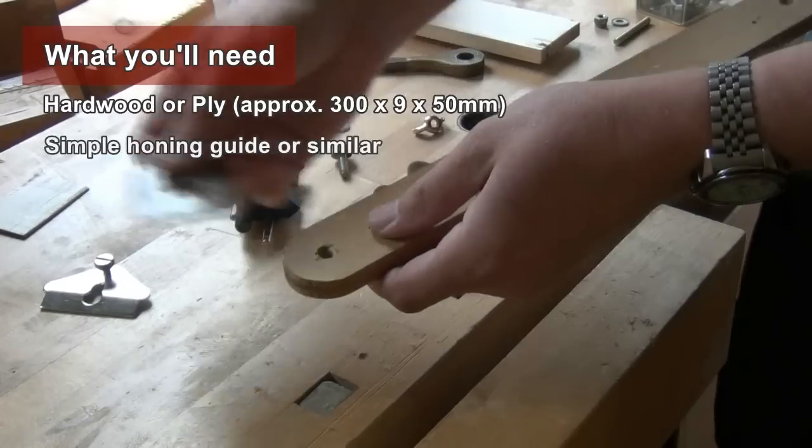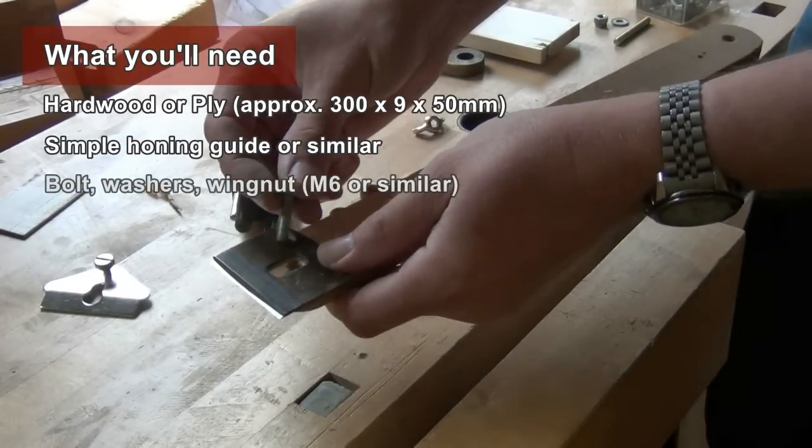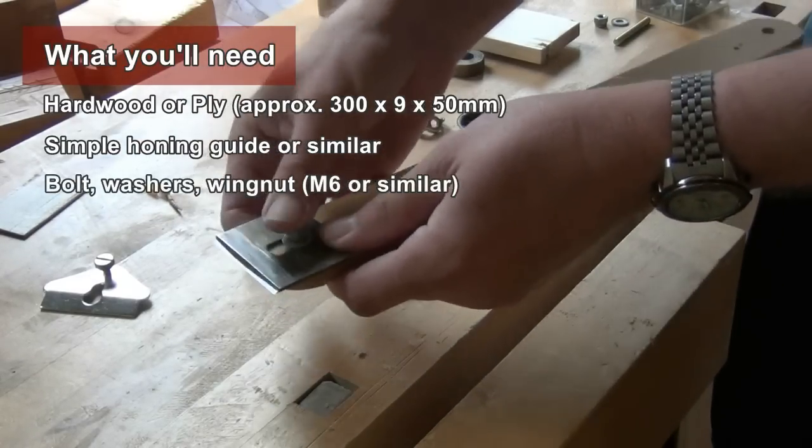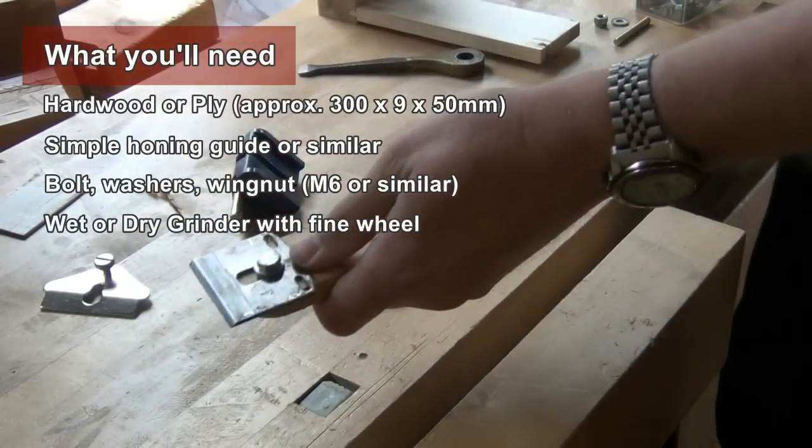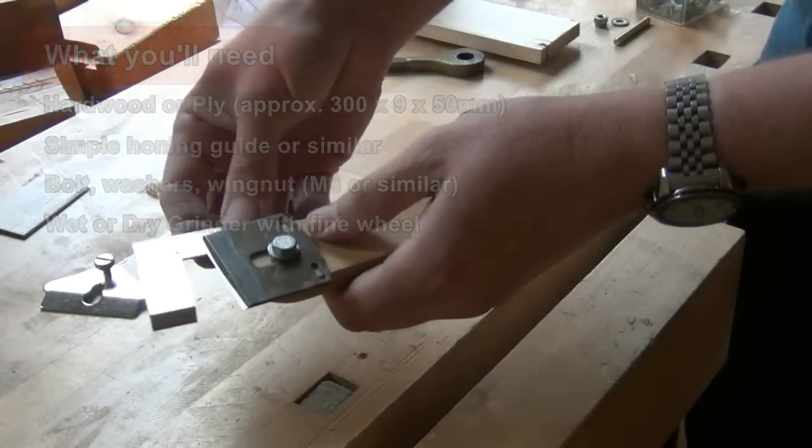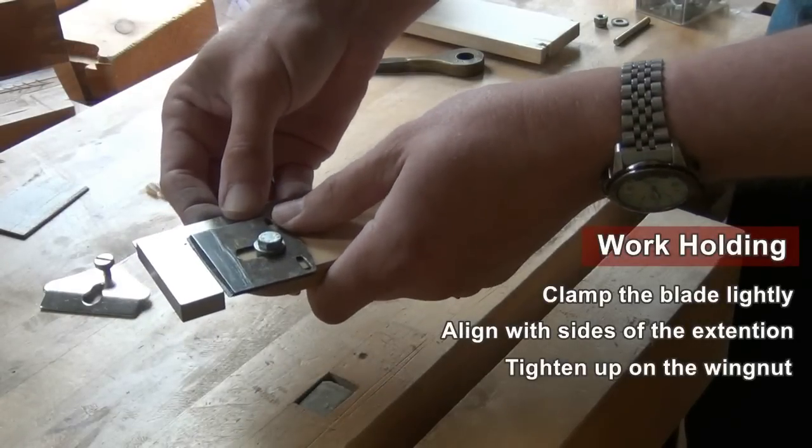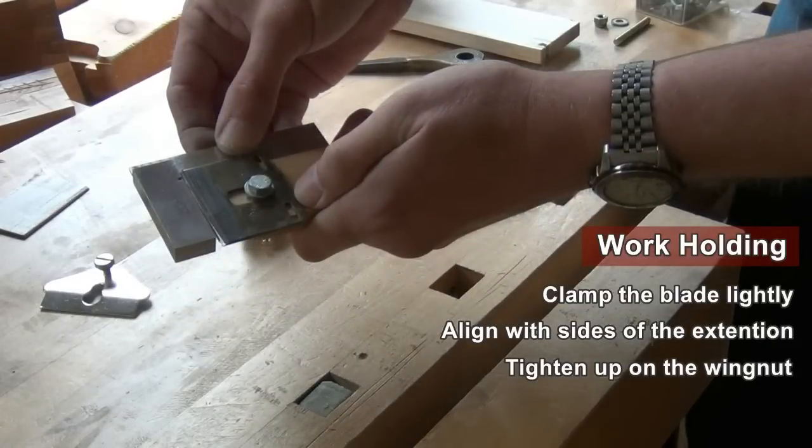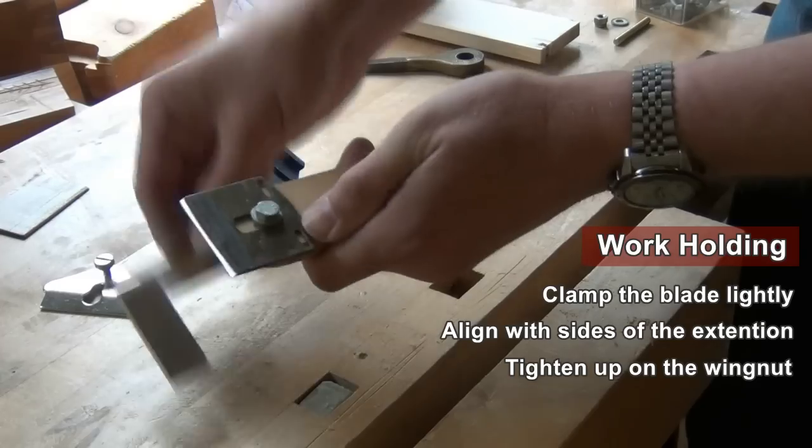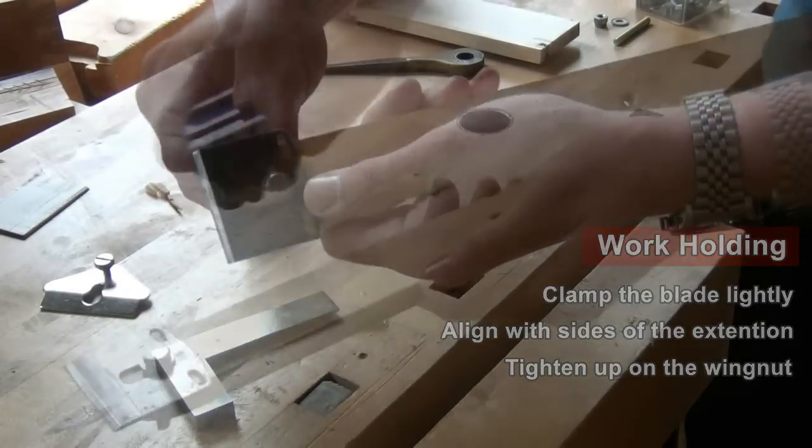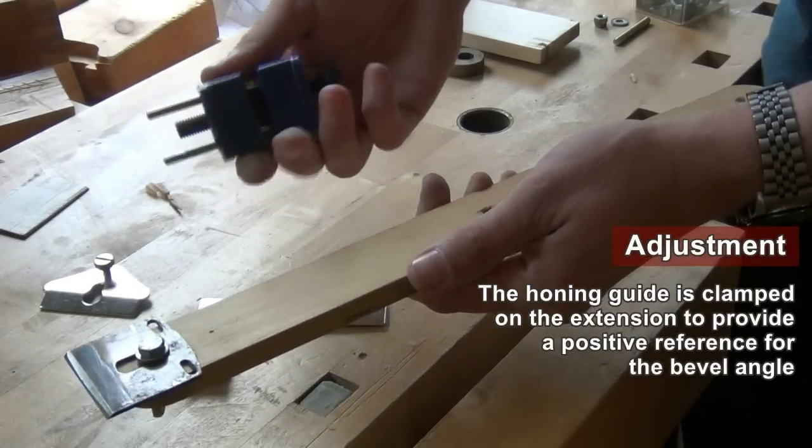Place the iron over it with the bevel side up. Place the bolt through the iron, through the hole, a washer and a wing nut on the back. And using an engineer's tri-square against the side of plywood, we just want to adjust the blade so that the edge is at 90 degrees to the side of the plywood.